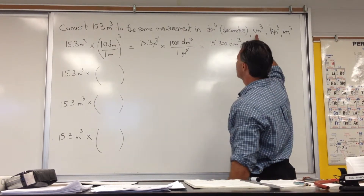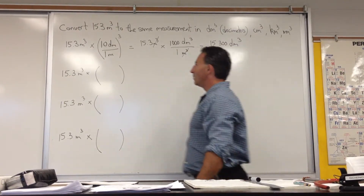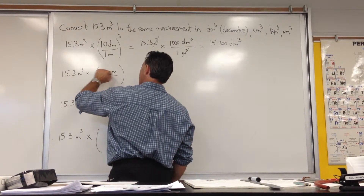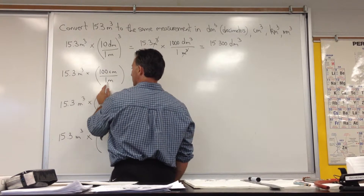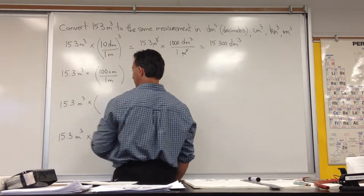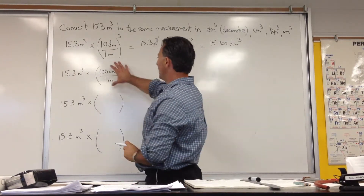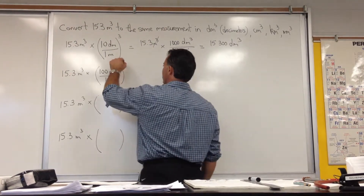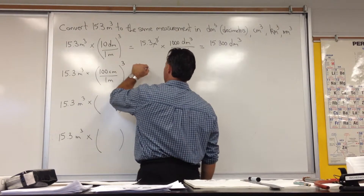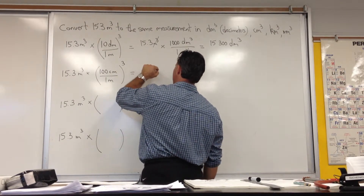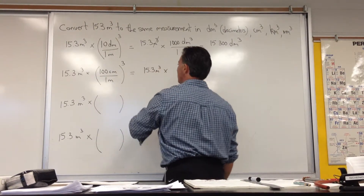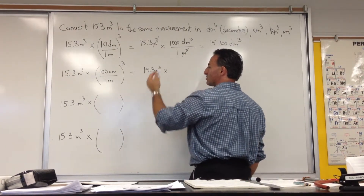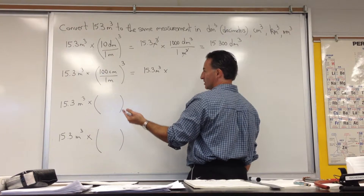In the second case, we're going to convert to centimeters cubed. We know there are 100 centimeters per meter. We're going to put meter in the denominator because we're trying to eliminate meter. But we have to cube the whole bracket because we're trying to cube meters, and of course we have to cube everything else in there as well. So we'll raise that to the power 3, and it's going to give us 15.3 meters cubed times 100 cubed, which is a million.